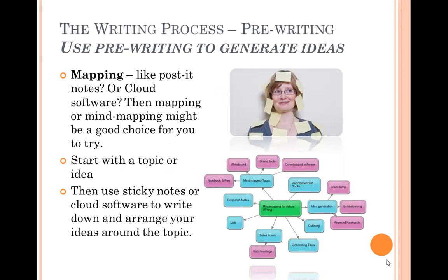If you like post-it notes or cloud software, you might like to do mapping as a pre-writing process. You start with a topic or idea in the center of a page — either on a sticky note or using cloud software — and then you branch off into several subtopics. For example, if I were writing an essay about apples, I might write about apples for baking or different varieties. From each subtopic, you choose further subtopics to pull out as much information as possible.